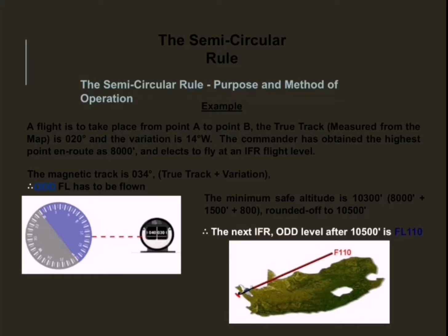Let's apply the method of operation of the semicircular rule with an example. A flight is to take place from point A to point B. The true track measured from the map is 020 degrees and the variation is 14 degrees westerly. The commander has obtained the highest point en route as 8,000 feet and elects to fly an IFR flight level. The magnetic track is 034 degrees, which falls in the odd sector. Considering the safety altitude and obstacles, the calculated level is 10,500 feet, so the next odd flight level is flight level 110. The VFR flight will fly heading 105.